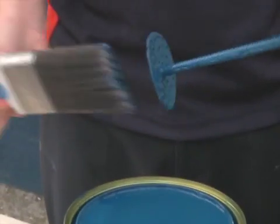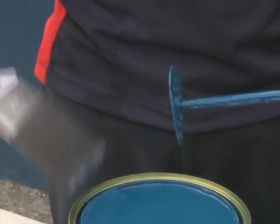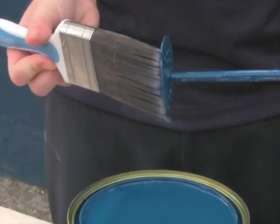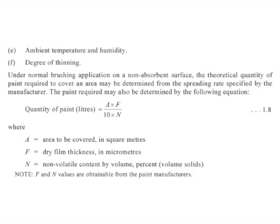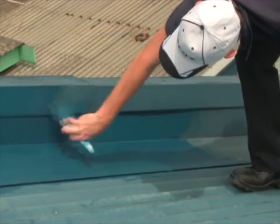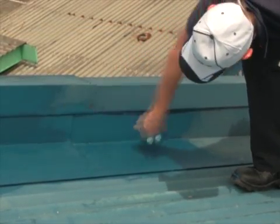This is referred to as volume solids. Volume solids are the pigment and the actual binder of the paint that remains on the substrate. In terms of controlling a spread rate, brush application usually gives less wastage, according to Australian Standards 2311, section 1.8.